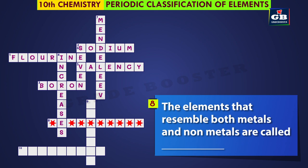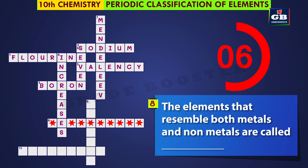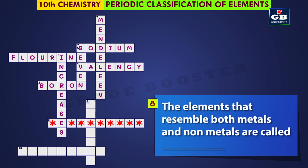Eight across: the elements that resemble both metals and non-metals are called dash. The answer is metalloids. The elements that resemble both metals and non-metals are called metalloids.